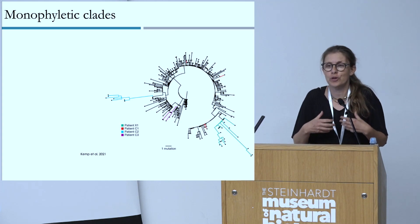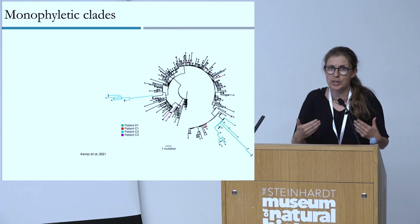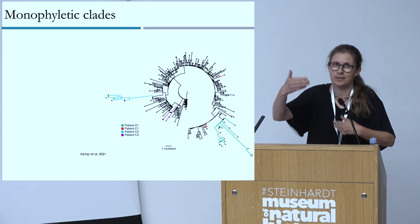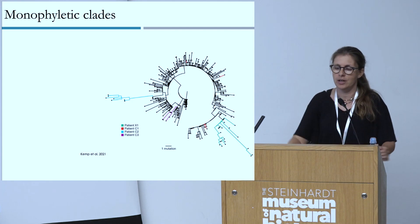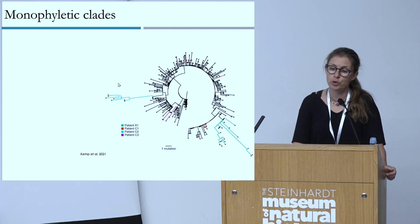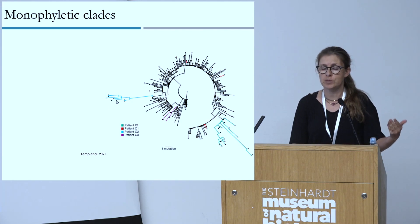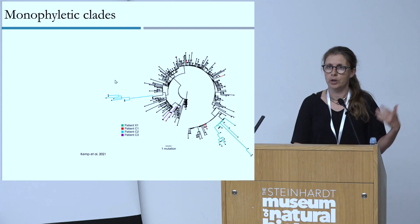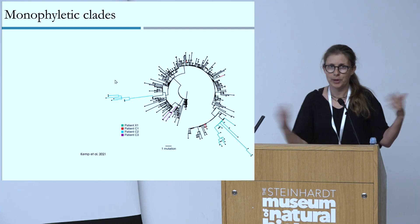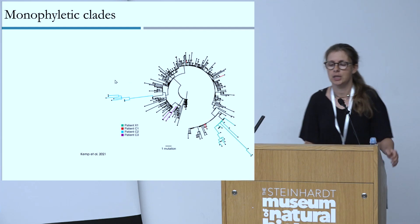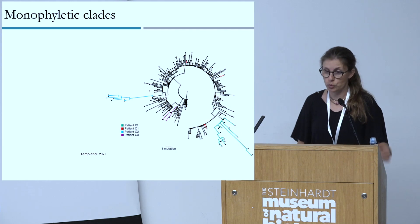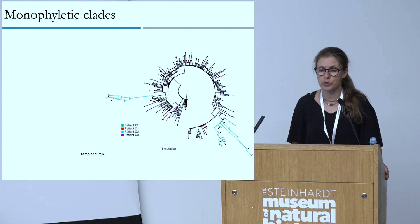We have an exception — the red patient does not cluster together — that's due to sequencing problems, which is an issue we have to deal with. But the idea is that chronically infected individuals will form these monophyletic clades because sequences sampled repeatedly from the same patient will be similar and cluster together on the tree. If there is no onward transmission, nothing else will mix in. This is a limitation — we're assuming no onward transmission.